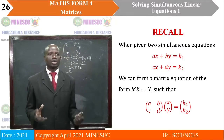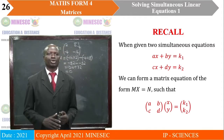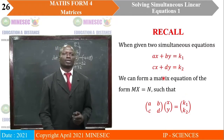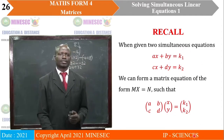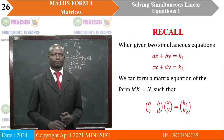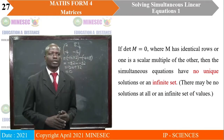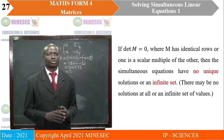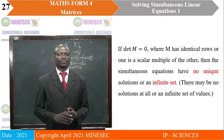What can we summarize from this lesson? When given two simultaneous equations, we can form a matrix equation by placing the coefficients of x and y into one matrix, the unknowns into a column matrix, and the constants into another column matrix. Secondly, if the determinant of the matrix of coefficients equals 0, the system has no unique solution or has an infinite set of solutions.